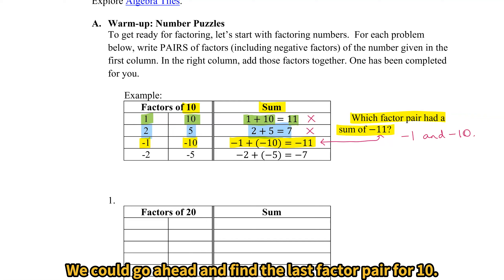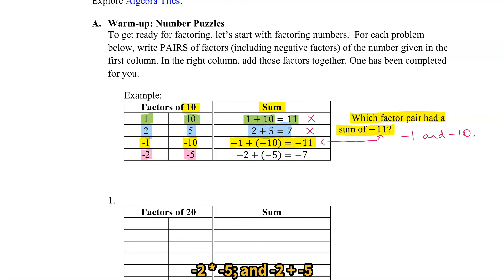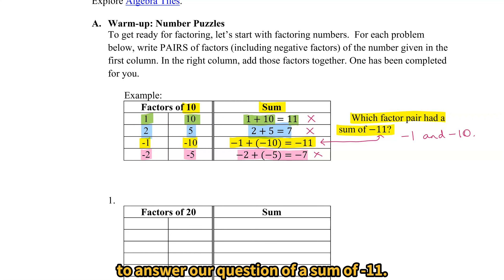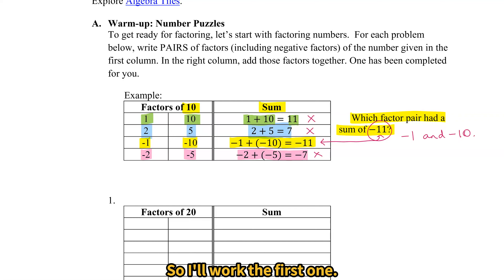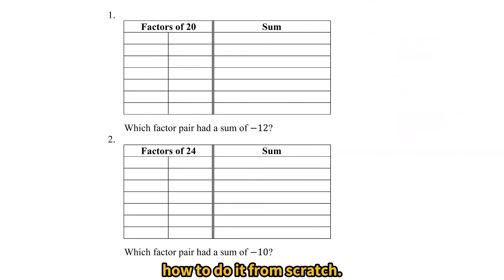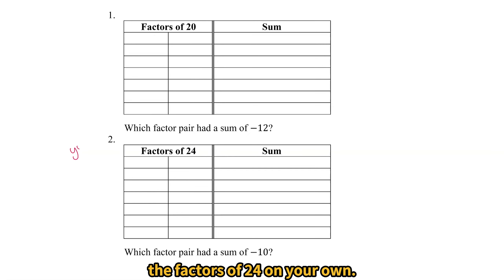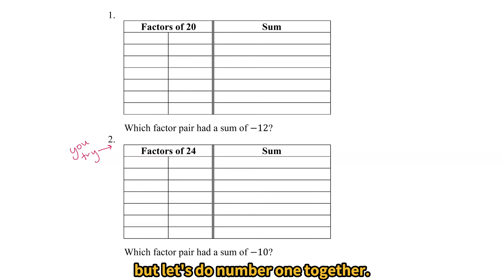We could go ahead and find the last factor pair for 10 — negative 2 times negative 5 — and negative 2 plus negative 5 gives us negative 7, which also doesn't work to answer our question of a sum of negative 11. But this is the kind of game we're going to play. I'll work the first one with factors of 20 and show you how to do it from scratch, and then I want you to try factors of 24 on your own. Let's do number 1 together.